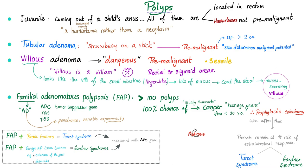Usually this disease starts after puberty, and then give it some time and it becomes cancer. So we do prophylactic colectomy — before it becomes cancer, we unfortunately have to remove the entire colon. It's a very ugly disease.